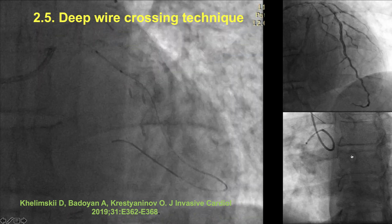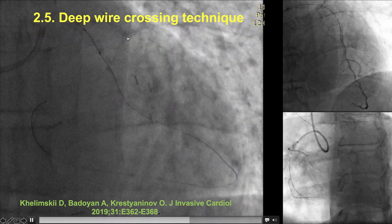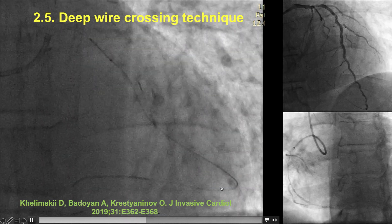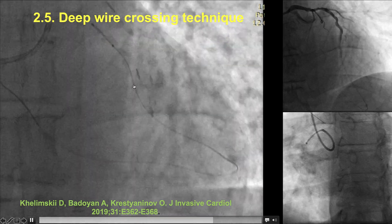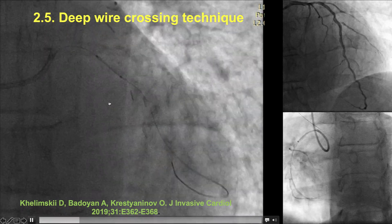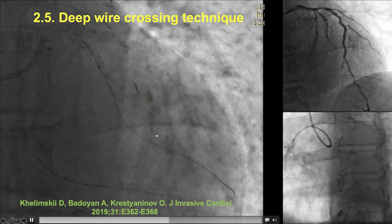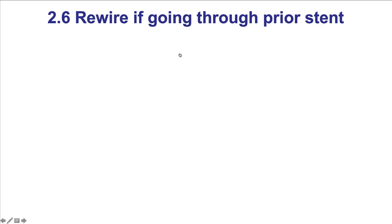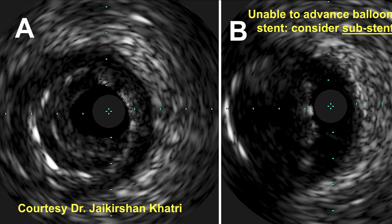A variation of the body wire technique is to put a balloon over the body wire, which can help deflect equipment. Another technique to improve wire support is the deep wire crossing technique, recently described in JIC. A polymer-jacketed soft non-tapered wire, such as the Fielder FC or the Whisper, is advanced through small connections into the ventricular cavity, allowing equipment delivery over the stiff part of the guide wire, which is easier to achieve. When wiring through previous stents, it is best to use a knuckled workhorse wire to ensure the wire has gone through the stent and not under the stent struts.